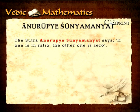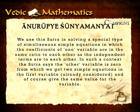We use this sutra in solving a special type of simultaneous simple equations in which the coefficients of one variable are in the same ratio to each other as the independent terms are to each other.